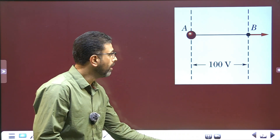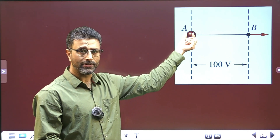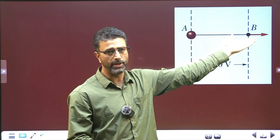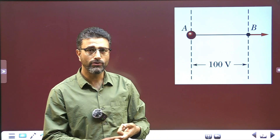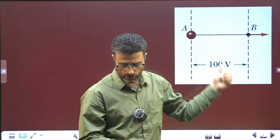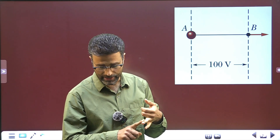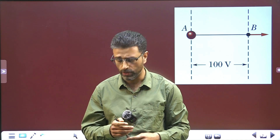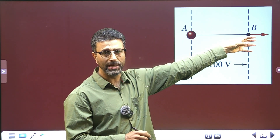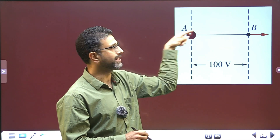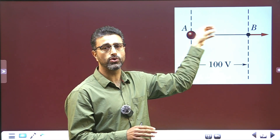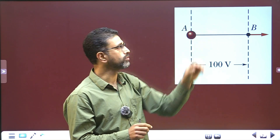We have a charged particle at point A, initially at rest, and we release it. After releasing, the particle is supposed to go through point B. For that we have to see whether A is at higher potential or B is at higher potential. The options are the charged particle placed at A: first case an electron, second case a proton, third case an alpha particle — simply a helium nucleus, two protons and two neutrons. For any particle to be accelerated through B, the force on the particle must be directed towards B.